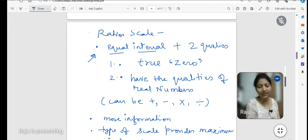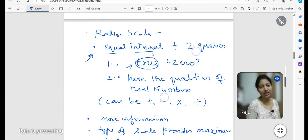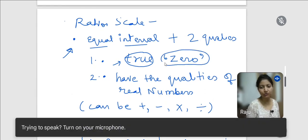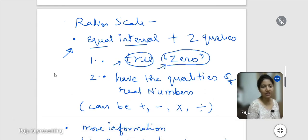Ratio scale is something like equal interval scale but it adds two qualities. As I said, in equal interval the true zero is arbitrarily assumed, but the ratio scale has absolute zero and true zero means that the